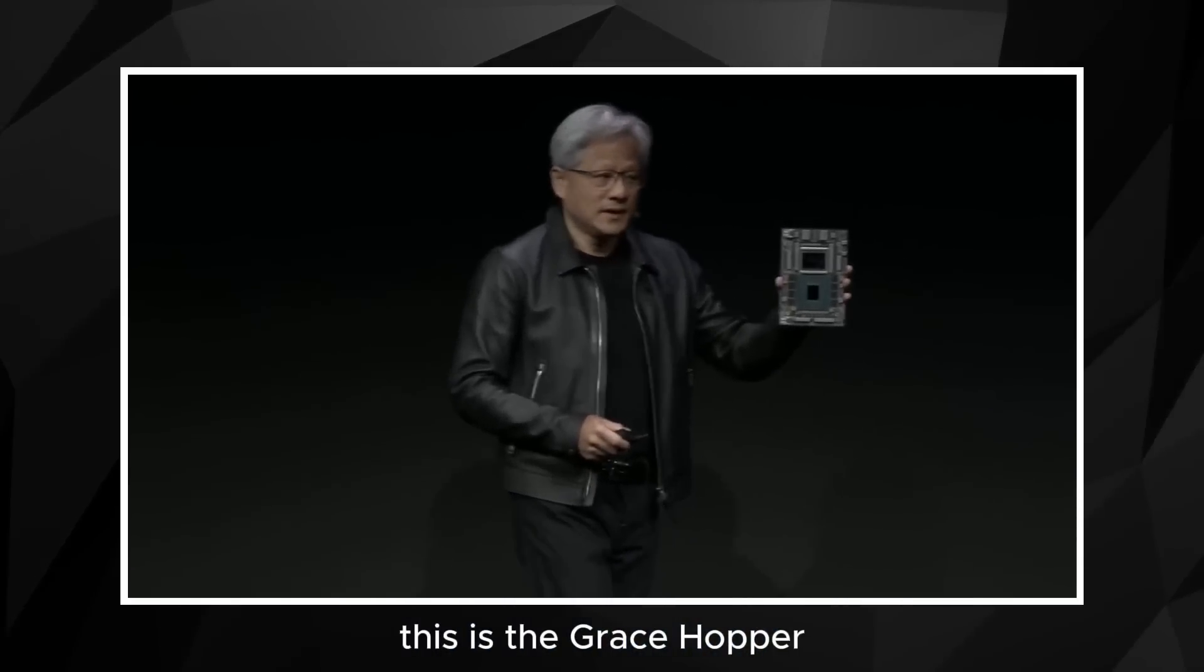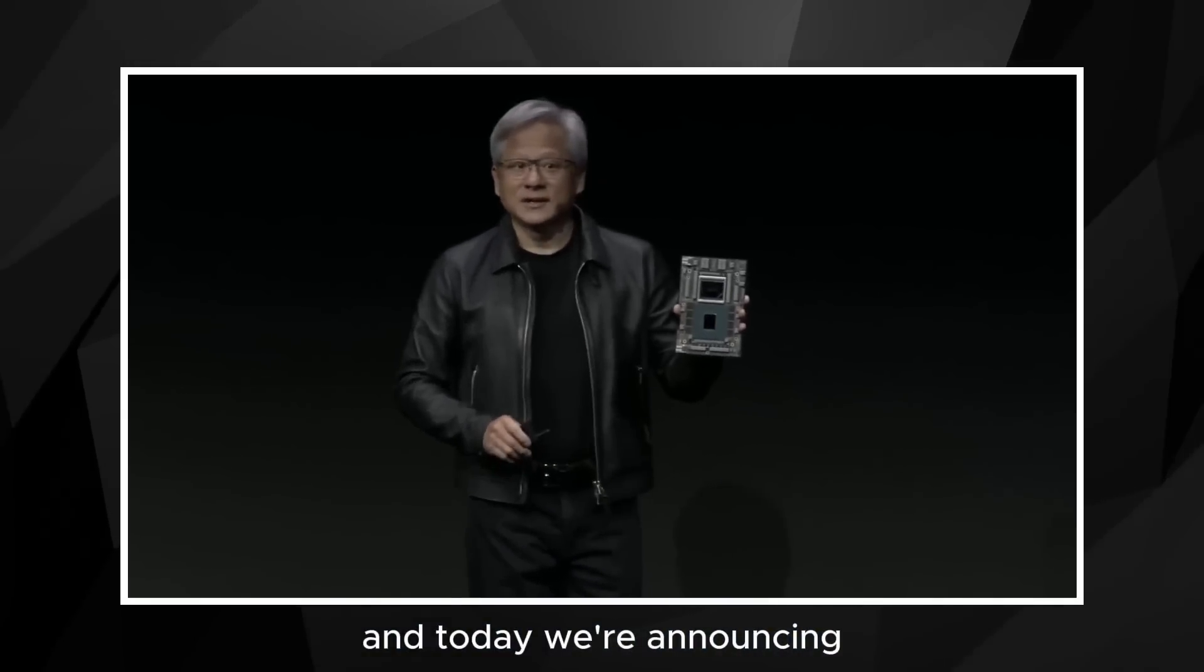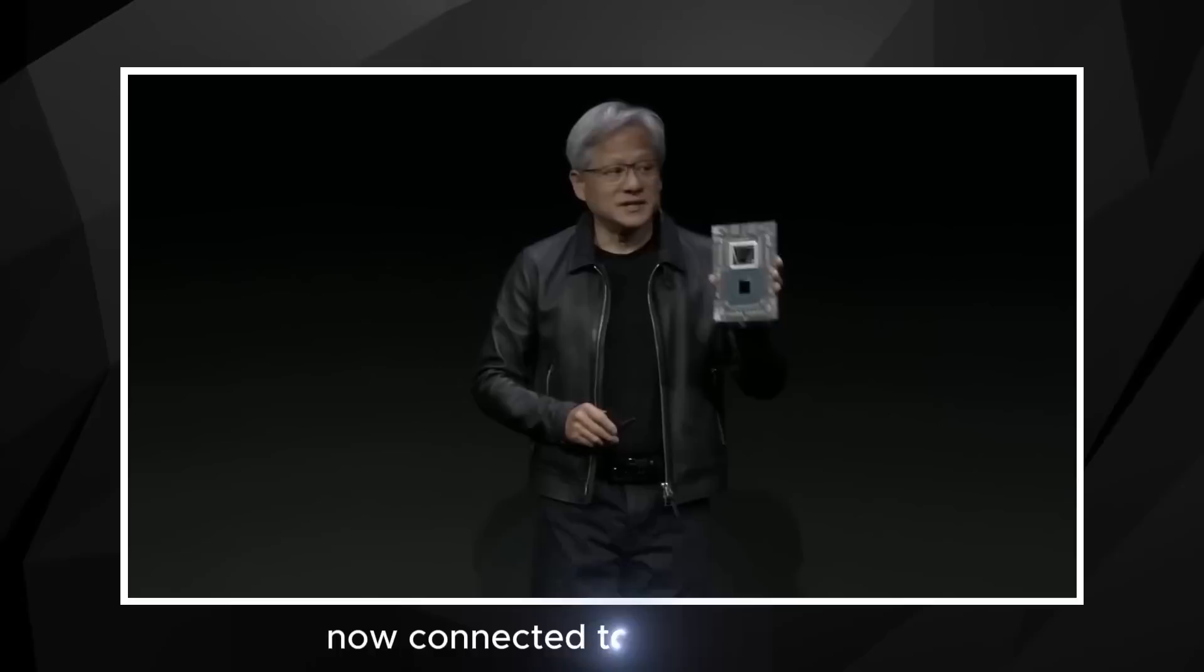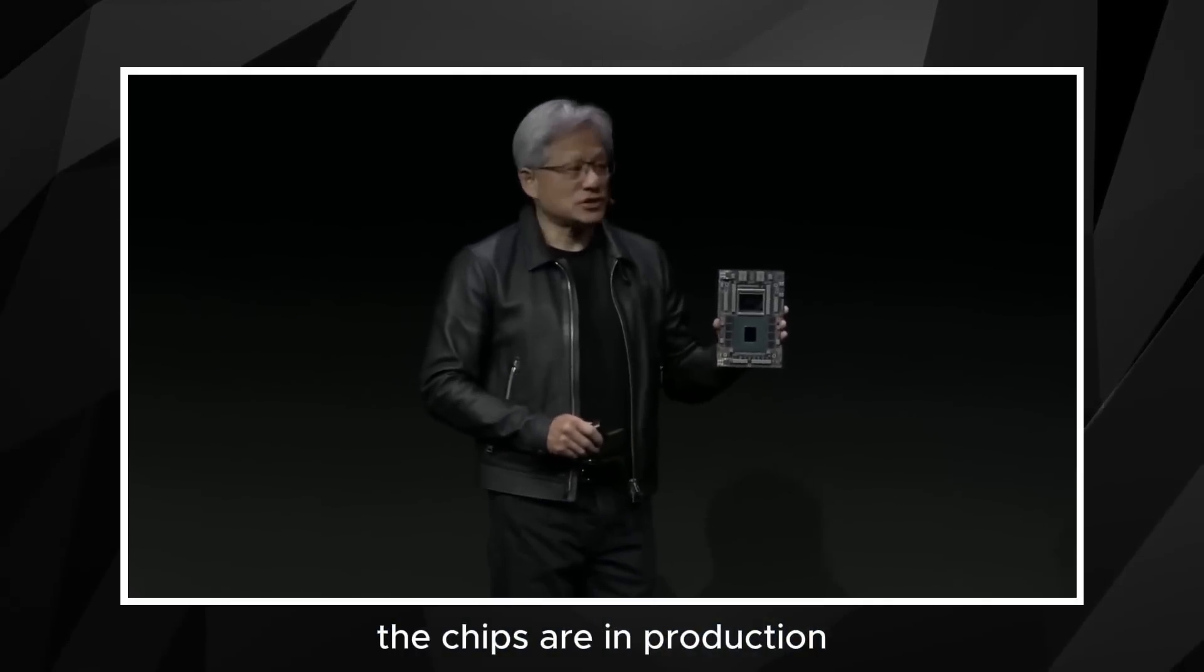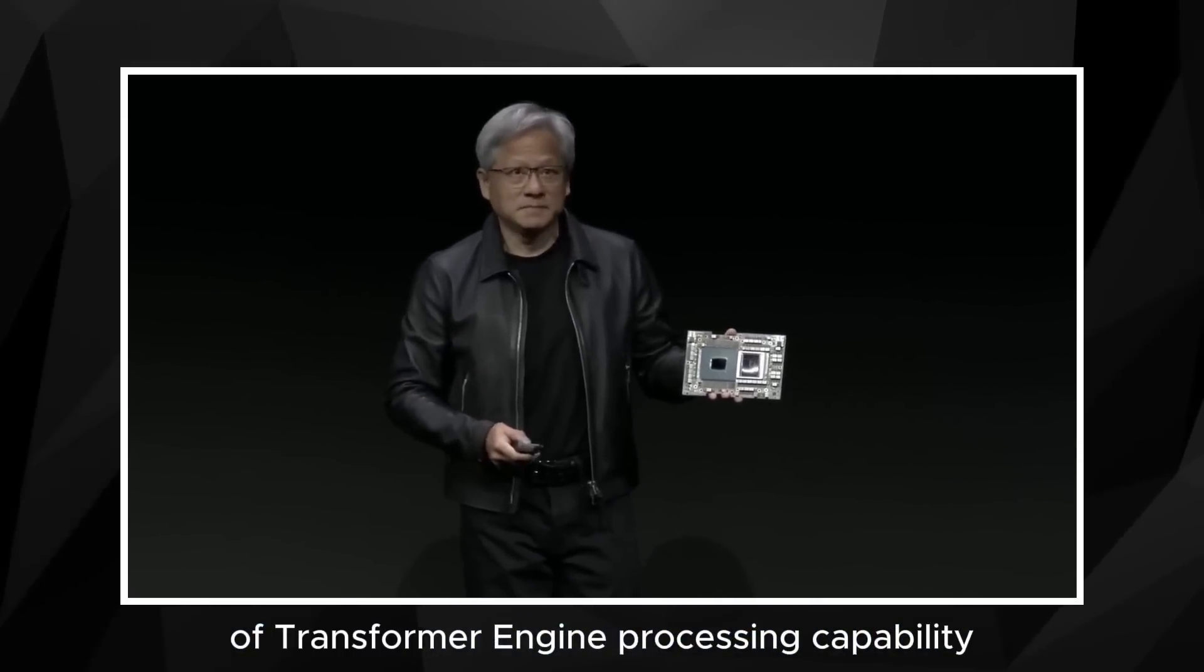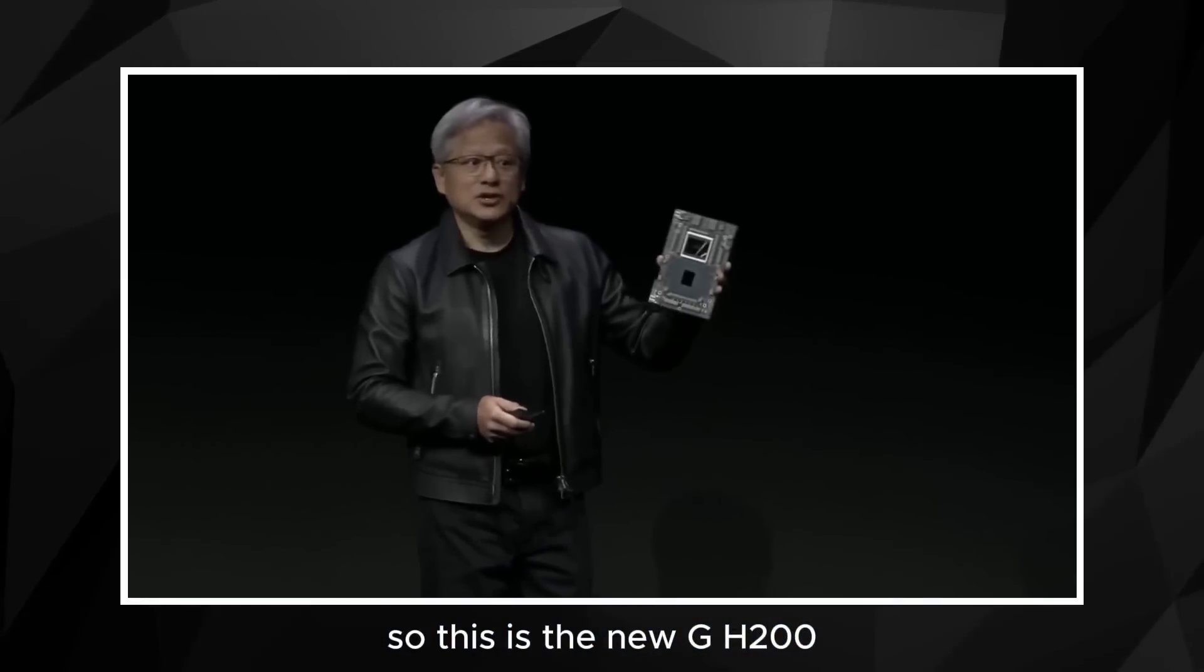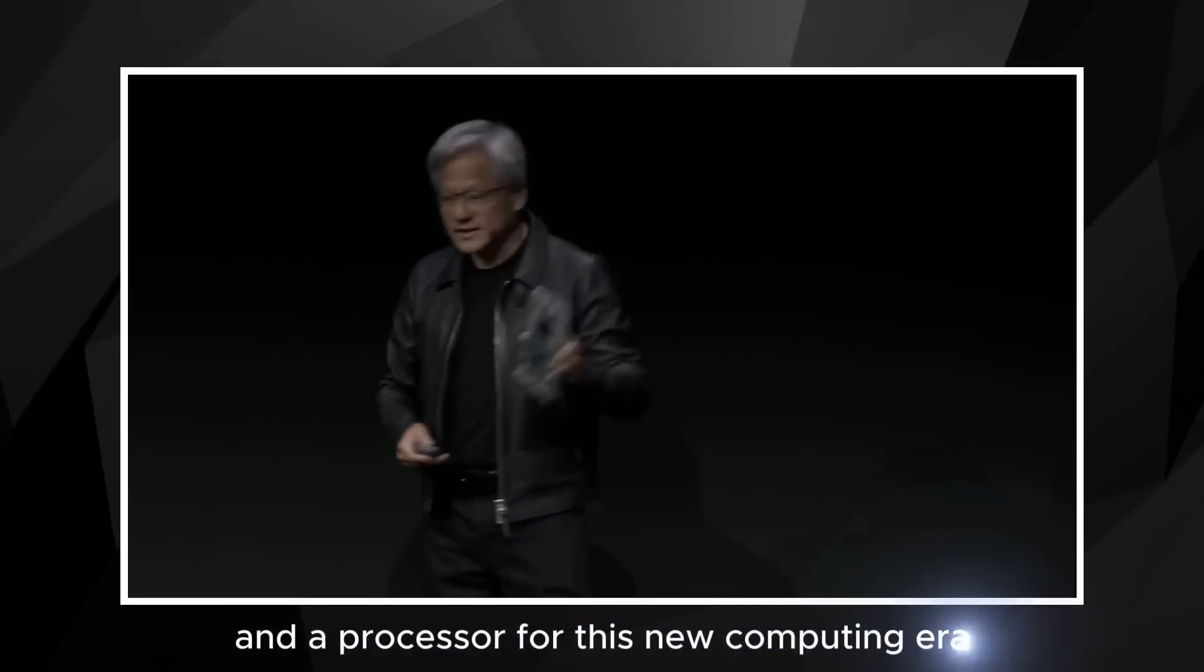So we created a brand new processor for the era of generative AI. This is the Grace Hopper. We announced Grace Hopper just only recently, several months ago. And today we're announcing that we're going to give it a boost. We're going to give this processor a boost with the world's fastest memory called HBM3E. The world's fastest memory now connected to Grace Hopper. We're calling it GH200. The chips are in production. It has four petaflops of transformer engine processing capability. And now it has five terabytes per second of HBM3E performance.